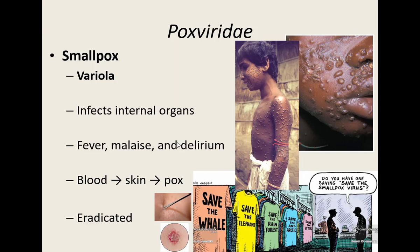Smallpox will ultimately cause fever, malaise, and delirium — it can easily cause fevers of over 106°F. It is very deadly. It travels around in the blood, which is how it gets out to the skin and causes those pus-filled lesions we call pox. Once those pox erupt, you are left with scars all over the body. If you survive, you are going to be pockmarked, with scars all over the entire body.